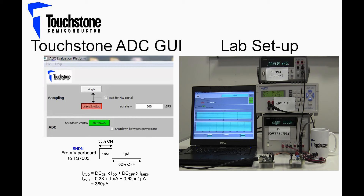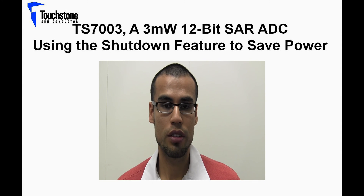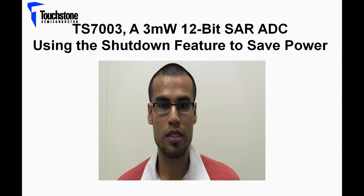If I now enable the shutdown function by selecting shutdown on the GUI screen, you can see that the supply current drops to approximately 380 microamps, which corresponds to a reduction in supply current by at least a factor of 2.5. In essence, the shutdown feature of the TS7003 ADC reduces the supply current by a factor of at least 2.5.